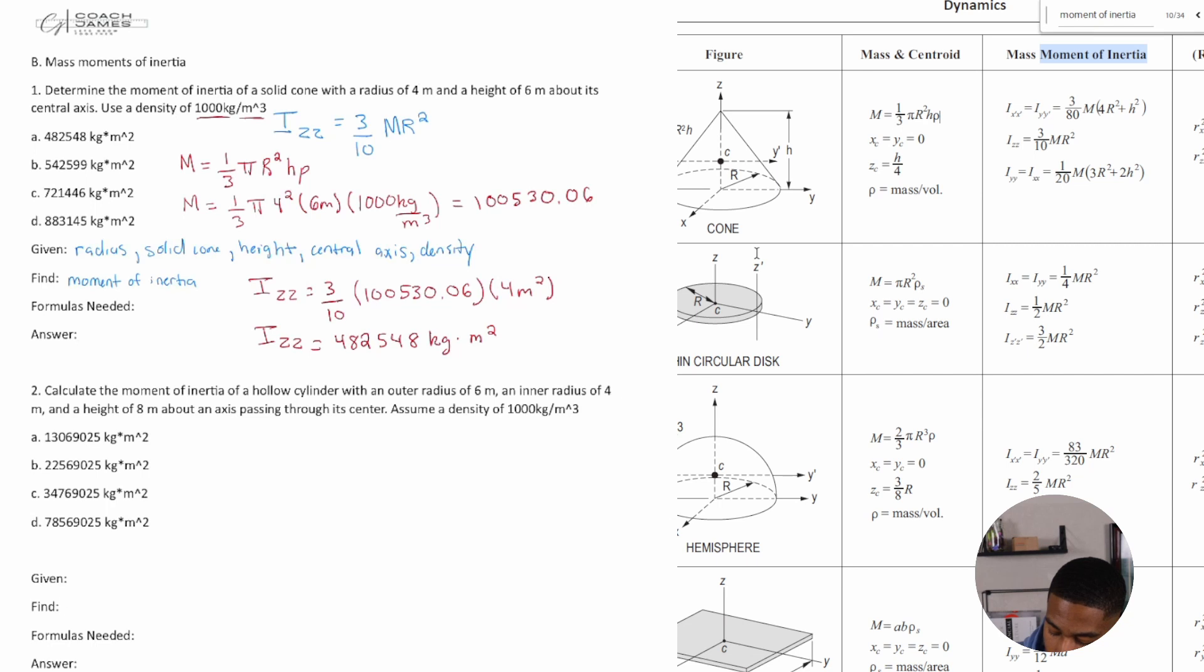The key thing here is to make sure that you have your units correctly. These units should have came out to be in kilograms. I didn't write that out, but you got your kilograms and then you're multiplying it by 4 meters squared, which will give you the units that you need. So let's move on to number two.